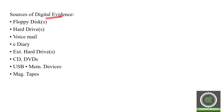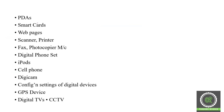What are the sources of digital evidence? Floppy disks, hard drives, voicemail, e-diary, external hard disks, CDs or DVDs, USB, memory devices, memory chips, magnetic tapes, PDAs, smart cards, web pages, scanners and printers, fax and photocopy machines, digital phone sets, iPods, cell phones, digital cameras, configuration settings of digital devices, GPS devices, digital TV, and CCTV.